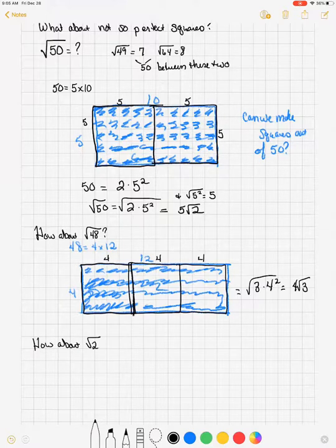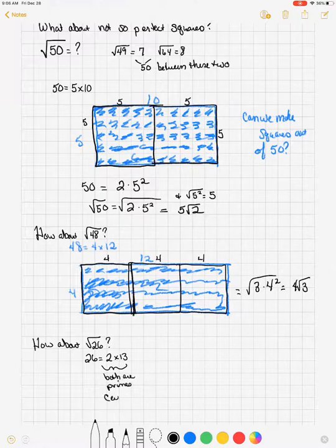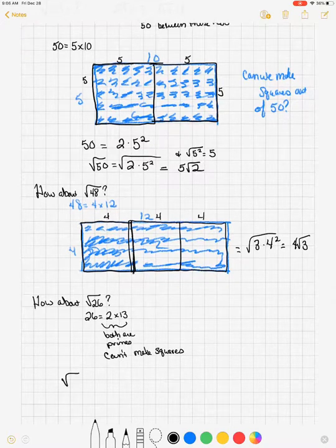How about the square root of 26? 26 is 2 times 13. 2 is prime. 13 is prime. We can't make squares out of prime numbers because they only have a dimension of 1 in themselves.